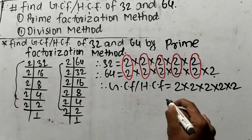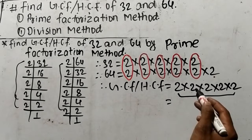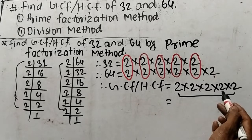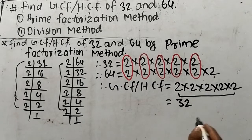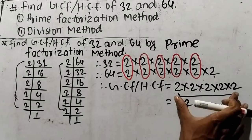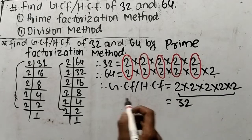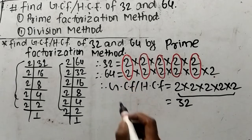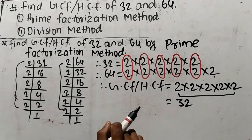Now we have to find out the product of all these common factors. So it is 2 times 2 equals 4, 4 times 2 equals 8, 8 times 2 equals 16, and 16 times 2 equals 32. So 32 is the product of all these common factors. Therefore, 32 is the GCF or HCF of 32 and 64. In this way we can find out GCF or HCF by prime factorization method.